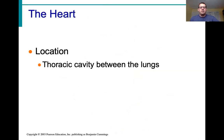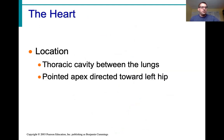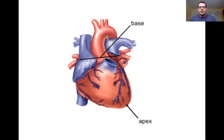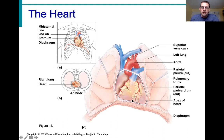The heart is located in the thoracic cavity between the lungs, specifically in the pericardial cavity. The bottom of the heart comes to a point called the apex, directed toward the left hip. The top of the heart is called the base — which is confusing, but it is what it is. The base is at the level of the second rib, the apex is in the fifth intercostal space. Your heart is about 14 centimeters long and nine centimeters wide, about the size of your fist, and weighs less than a pound.